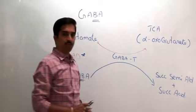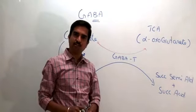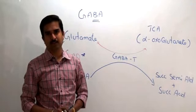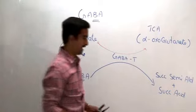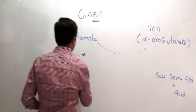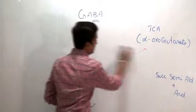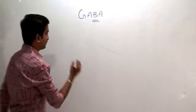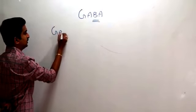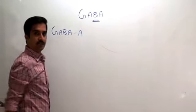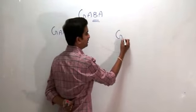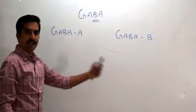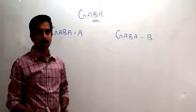Now let us look at the types of GABA receptors and their mechanisms of action. There are two types of GABA receptors: GABA-A and GABA-B. The mechanisms of action of GABA-A and GABA-B are totally different.